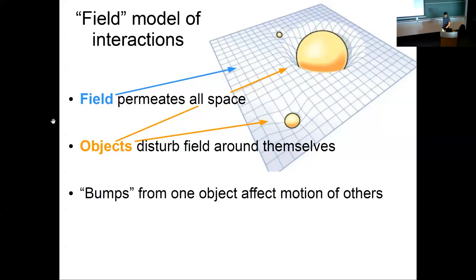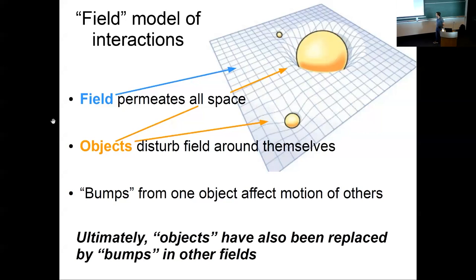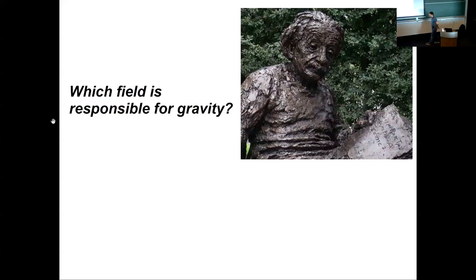In the most modern iteration of it, the objects themselves have actually been replaced by other kinds of fields. So it's really one kind of field, bumps in one kind of field, interacting, creating bumps in another kind of field. This is how we get around action at a distance today.